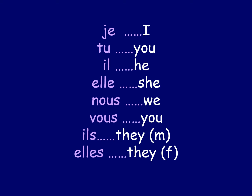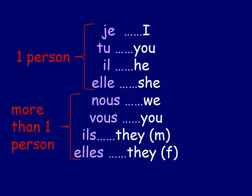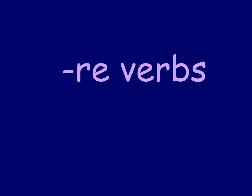It's important to get used to this format because you'll see it a lot. The first three — first person singular, second person singular, third person singular — involve one person: je, tu, il, elle. The bottom four involve more than one person: nous, vous, ils, elles. You need to remember that order. Today we're talking about RE verbs.